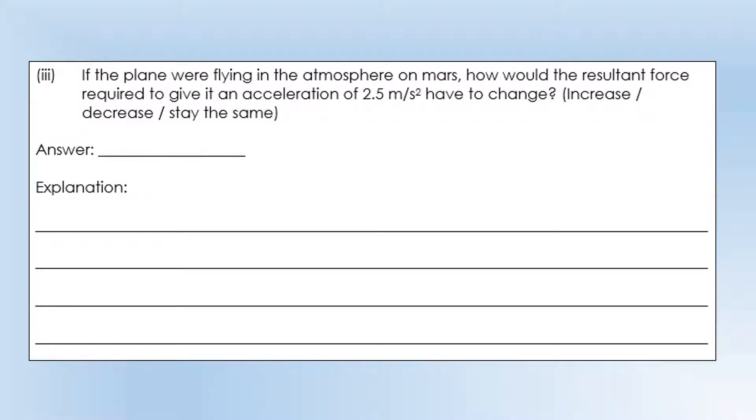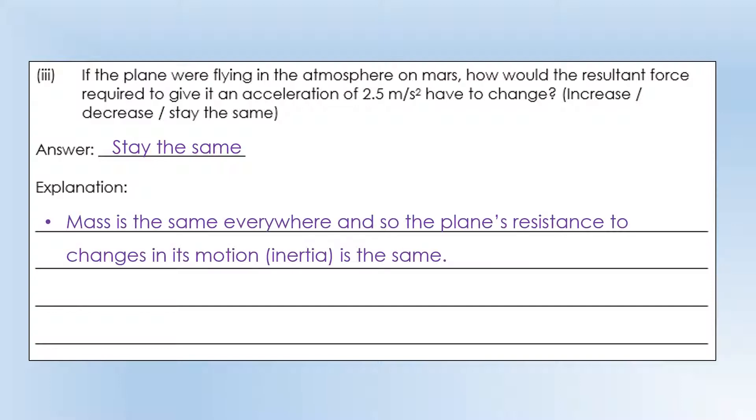Okay, so if the plane was flying in the atmosphere on Mars, how would the resultant force required to give it an acceleration of 2.5 metres per second have to change? Would it increase, decrease or stay the same? And we're going to look for an explanation for the answer. So the correct answer here is it would stay exactly the same. And the key to this is that mass is the same everywhere. So it doesn't matter if we're on the Moon, Mars, in outer space, wherever you are, mass is the same.